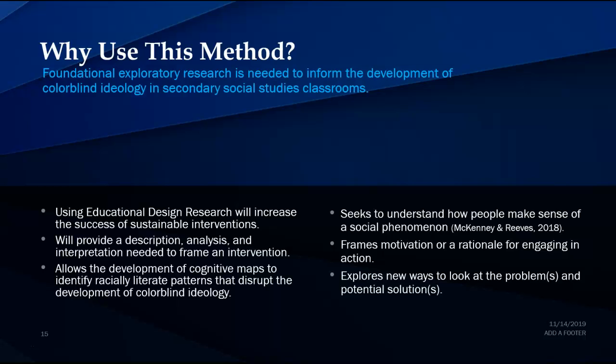This method is used because it will help inform the development of understanding colorblind ideology and how to disrupt it. It will increase the success of sustainable interventions and provide the needed components to frame an intervention. It will also allow cognitive maps to develop in identifying racially literate patterns to disrupt colorblind ideology, help frame how people make sense of social phenomena such as colorblind ideology and racism, help target motivation or rationale for engaging in action, and introduce new ways of looking at this problem along with potentially new solutions.